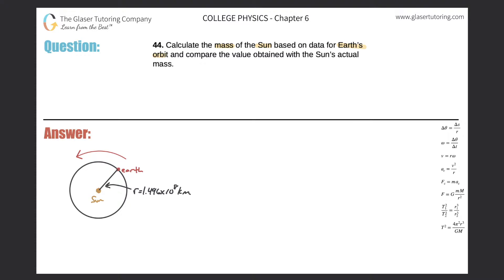As the Earth orbits the sun, it does so with some angular velocity. Do you know the angular velocity of the Earth around the sun? You probably do — you just might not realize it in that form. The Earth makes one full revolution every year. Angular velocity is simply an angle change per unit time.